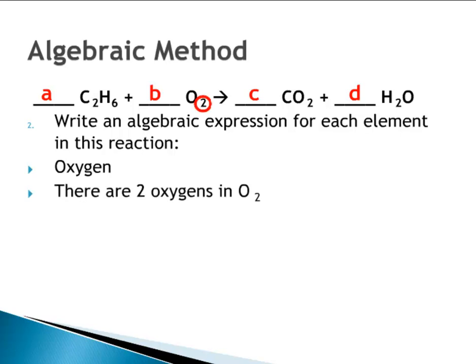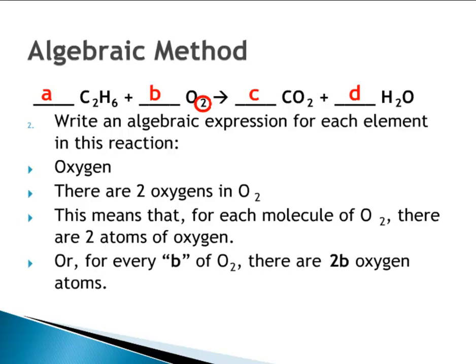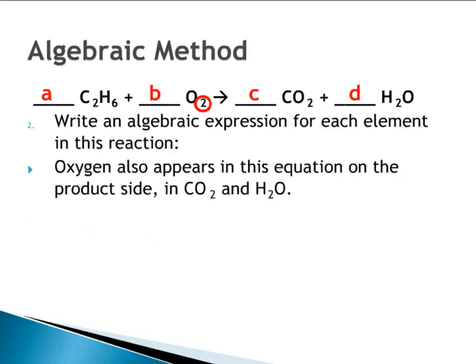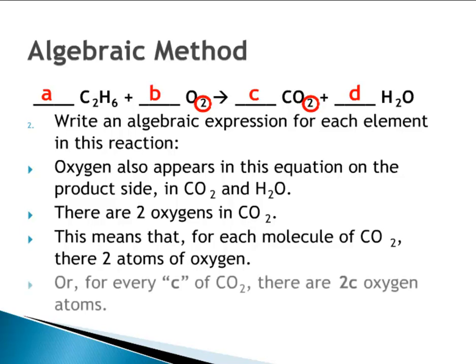For oxygen, there are two oxygens in O2, meaning for each molecule of O2 there are two atoms of oxygen, or two B oxygen atoms for every B of O2. Oxygen also appears on the product side in both carbon dioxide and water. There are two oxygens in carbon dioxide, so for every C of carbon dioxide there are two C oxygen atoms.